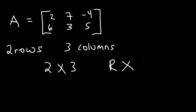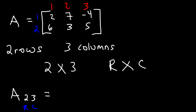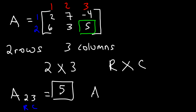You need to be able to identify a specific element in a matrix. For example, what is element 2 comma 3, also written as element A₂₃? This is in matrix A — the first number represents the row, the second represents the column. So element A₂₃ is in the second row, third column, which is the number 5. So element A₂₃ has a value of 5.